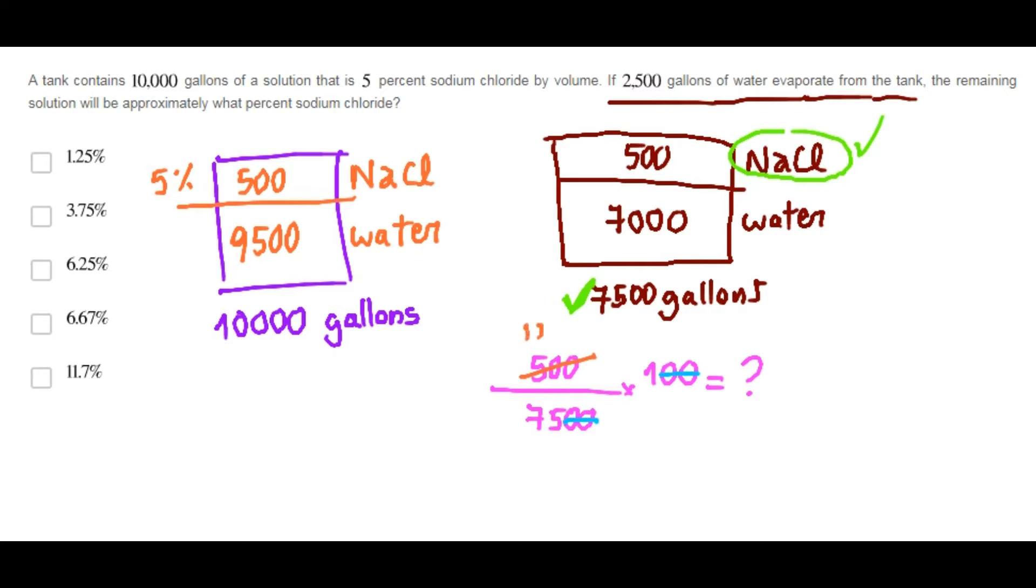Now, this can be reduced to 100 over 15. Again, this is 20, and this is 3. So, 20 over 3 is...